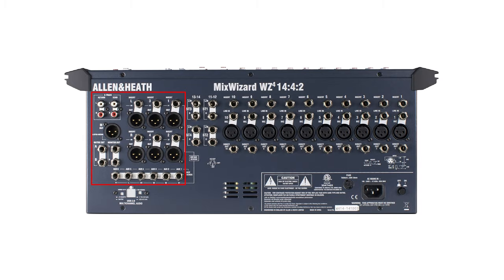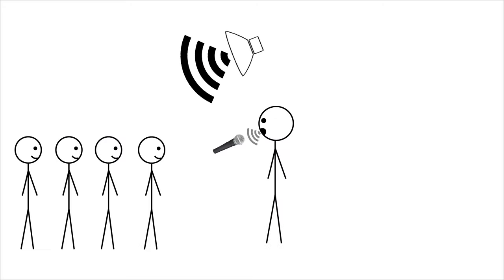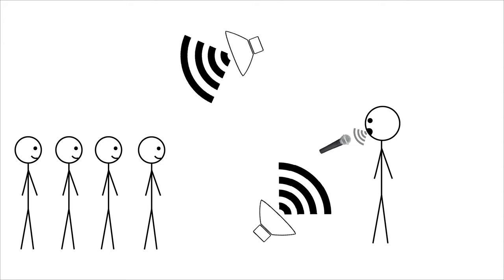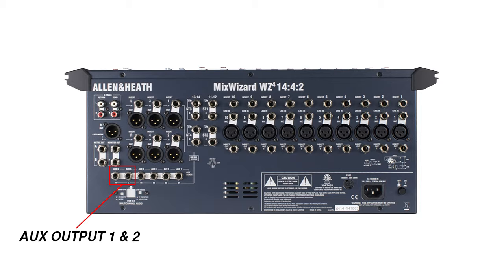In most situations, you'll want to route audio to at least one pair of outputs connected to your main left and right speakers. However, in many situations you'll need additional outputs. For example, you might want to route signals to stage monitors so that performers can hear themselves. In that case, you'll want a mixer that has auxiliary outputs that can be connected to those stage monitors.